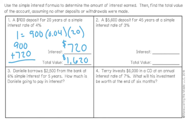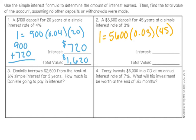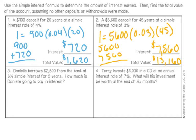The next problem says a $5,600 deposit for 45 years at a simple interest rate of 3%. I'm going to use my same simple interest formula and plug in the values. The principal is $5,600, the rate is 3% converted to a decimal, and the time is 45 years. Using the calculator, I get $7,560 as our interest. Since the problem wants the total value, I take the original deposit of $5,600 and add the interest, giving a final value of $13,160 in the account.